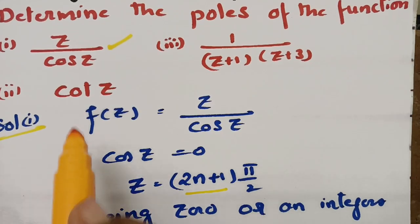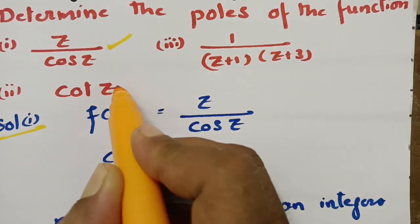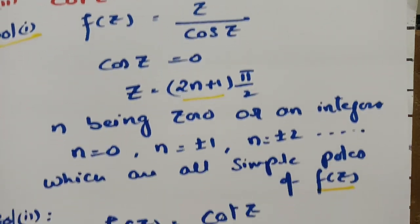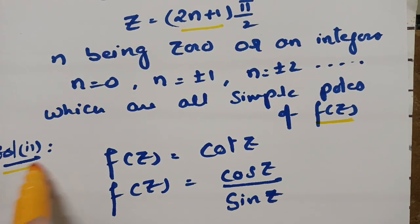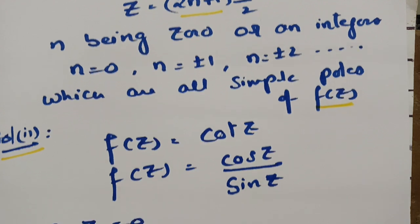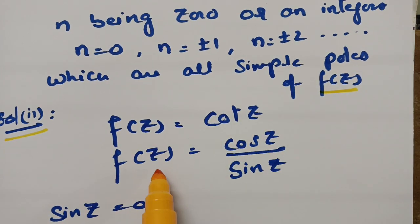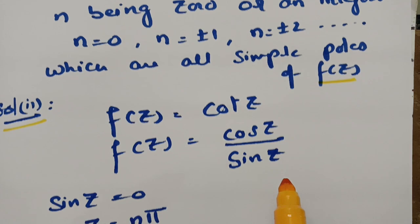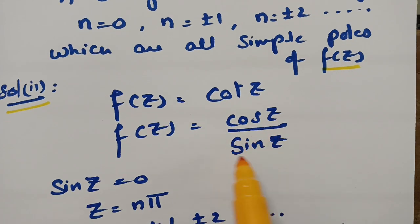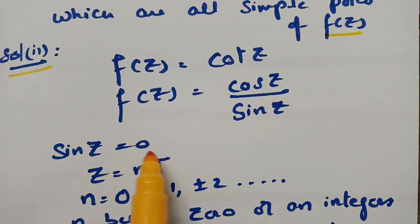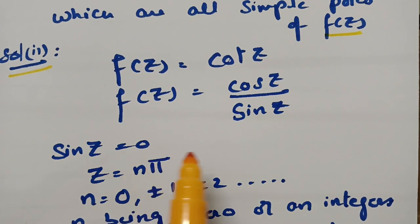Next, in the second question, f(z) is cot z. For cot z, we can write f(z) = cos z by sin z. In order to find the singularities, we have to equate the denominator to 0. So, sin z is equal to 0.